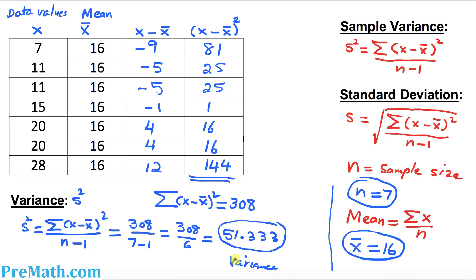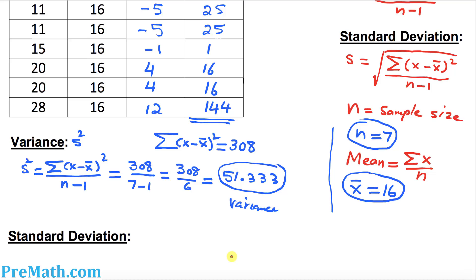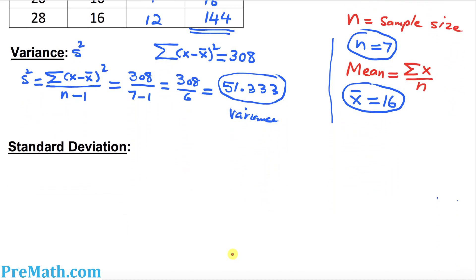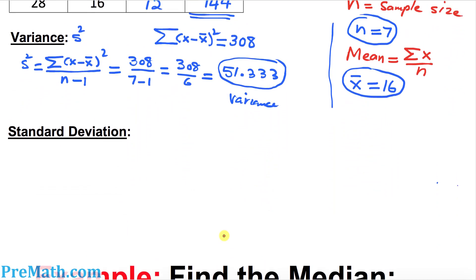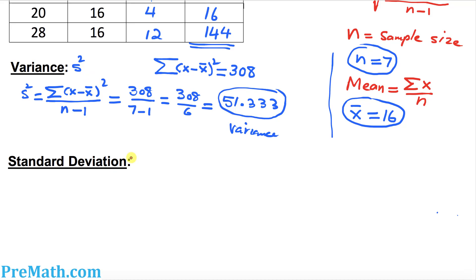And now we're going to figure out the standard deviation. Standard deviation is always represented by s. So s is going to be the formula, which is the square root of sigma x minus x bar squared divided by n minus 1.